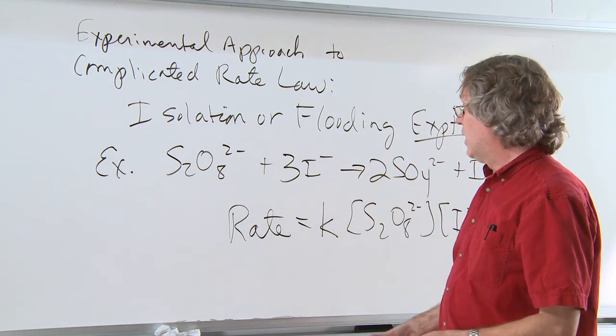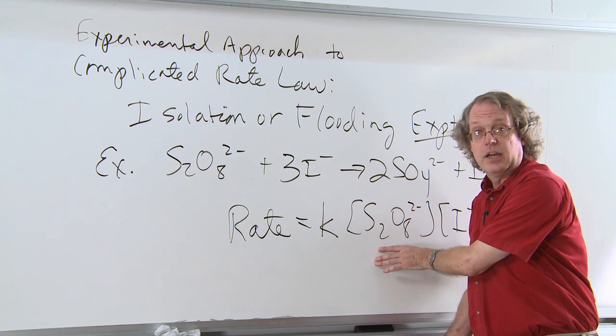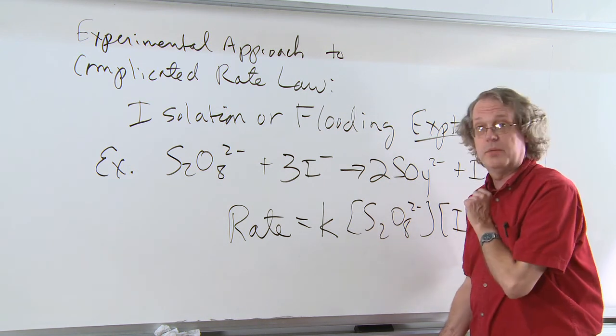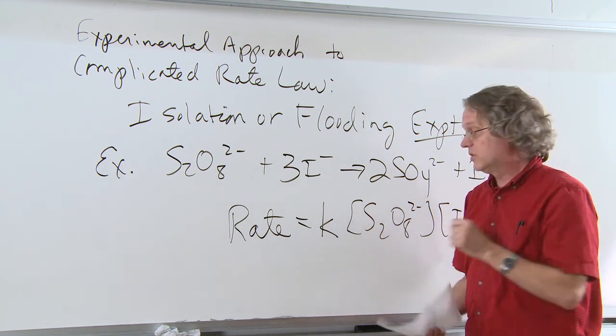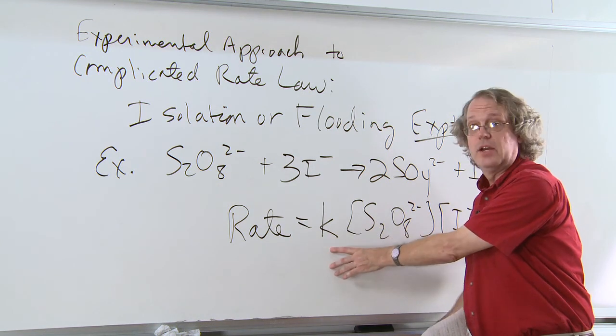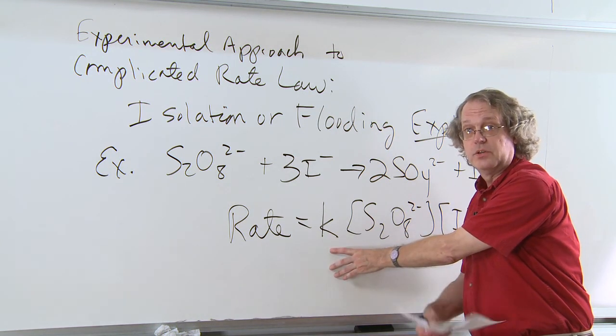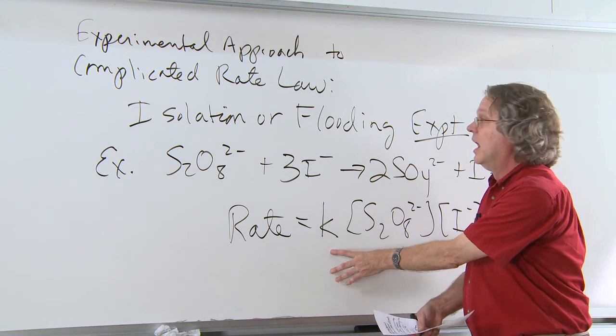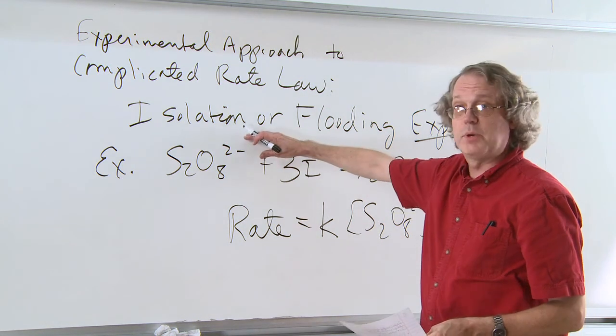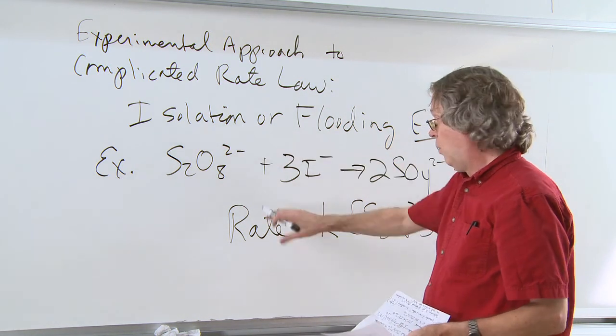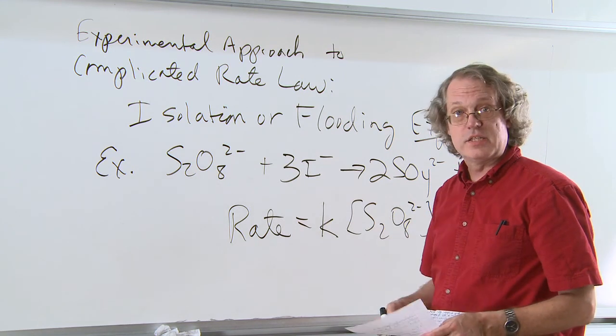The integrated rate law for even this simple of an expression is very complicated. In fact, if it gets much more complicated than this, you can't solve for the integrated rate law in closed form and you have to start doing numerical analyses. A simpler way is to use this experimental procedure to isolate one of these species. So let's see how that works.